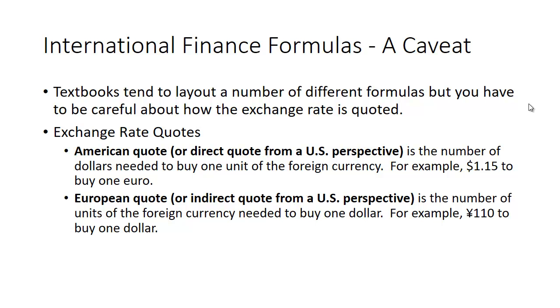Textbooks tend to use F for forward rate and S for spot rate and may use that same quoting system throughout the text, but they don't keep reminding you. So if you happen to see it quoted in a different textbook, you may be confused.